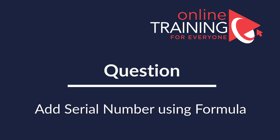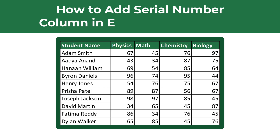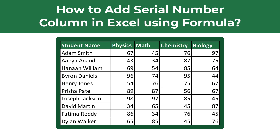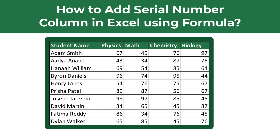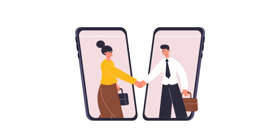Here is an interesting question you frequently see on the test. You're presented with a set of data and you need to add a serial number column to this data using an Excel formula. In our case we're presented with student grades information and for each student we need to add a serial number. Give yourself a little bit of time to see if you can complete the steps in the simulator, and I am going to move forward and reveal the solution for you.